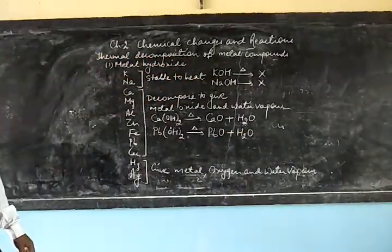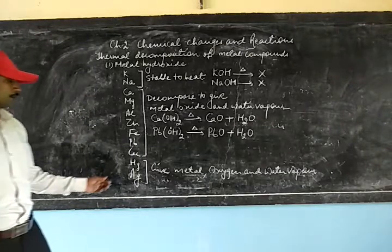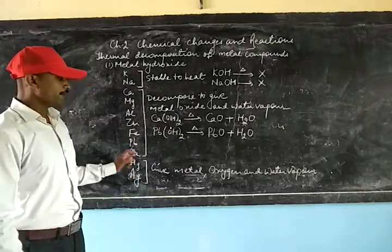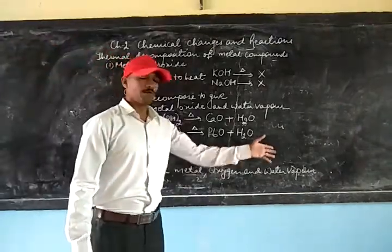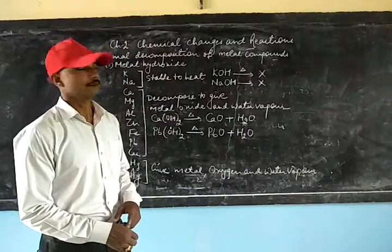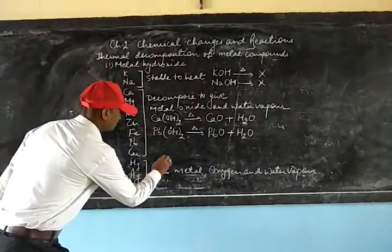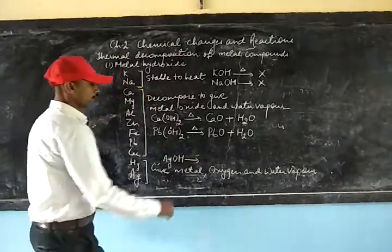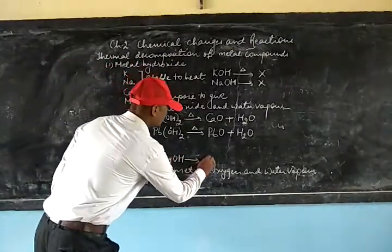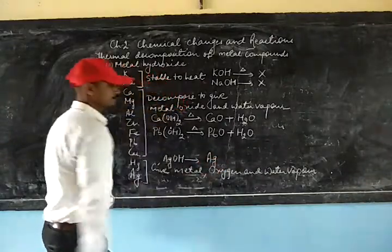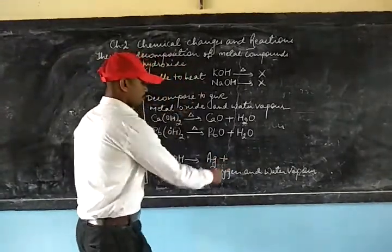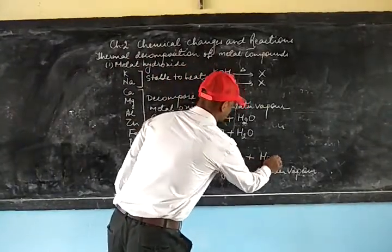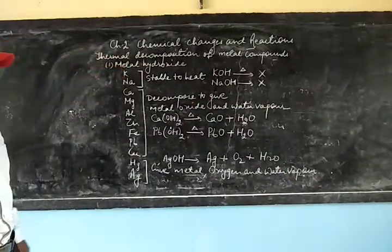For example, lead hydroxide will decompose to give lead oxide and water vapor. As far as the hydroxides of mercury and silver are concerned, they will form the metal, oxygen, and water vapor. For example, silver hydroxide AgOH decomposes to give Ag plus O₂ plus water vapor H₂O.